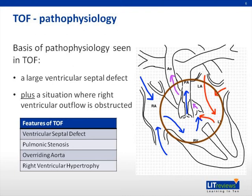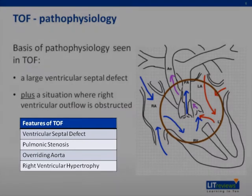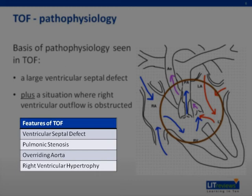In summary, there are four cardinal features of TOF that are important to remember: a VSD, pulmonic stenosis, overriding aorta, and right ventricular hypertrophy due to the increased work of the right ventricle against the outflow obstruction.